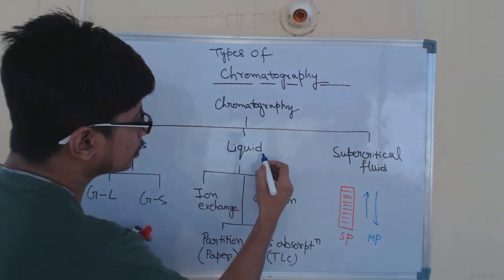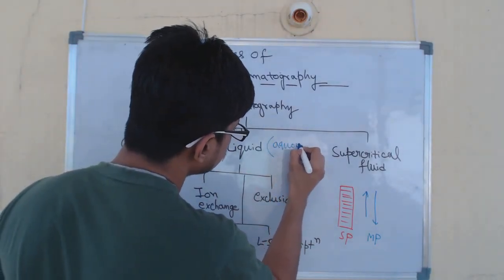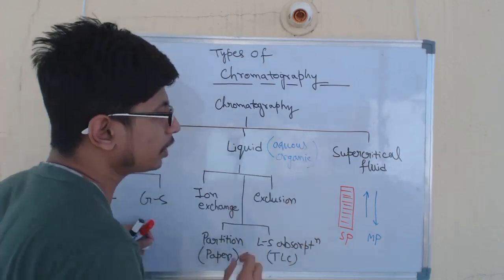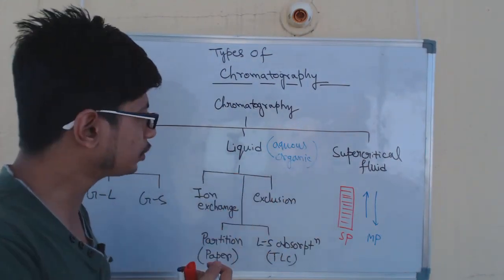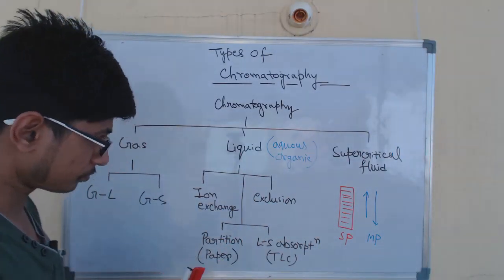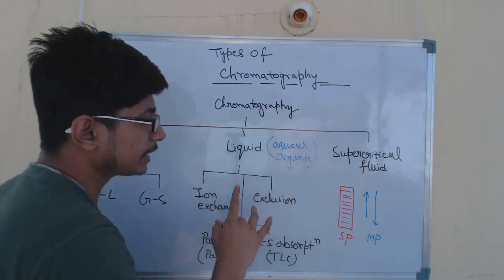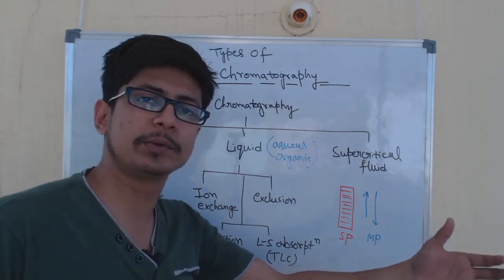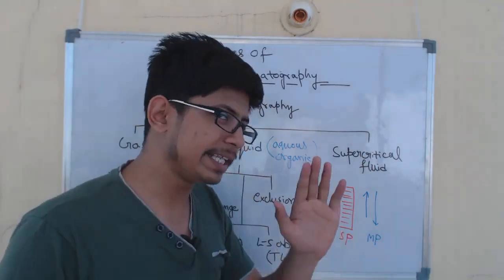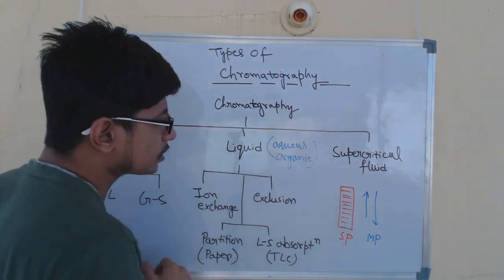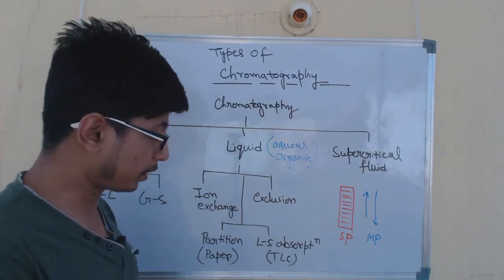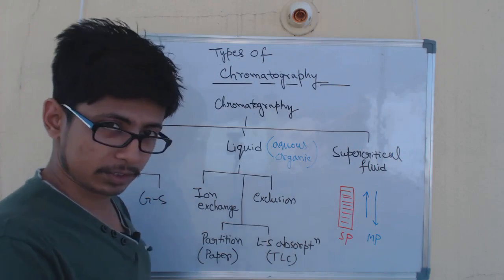The liquid form of the molecules could be either aqueous solution or organic solution — the molecules can be present in water as an aqueous solution or in organic solutions. For the aqueous type, the example is HPLC, high pressure liquid chromatography. For the organic solvent type, the examples are thin layer chromatography (TLC) or paper chromatography.